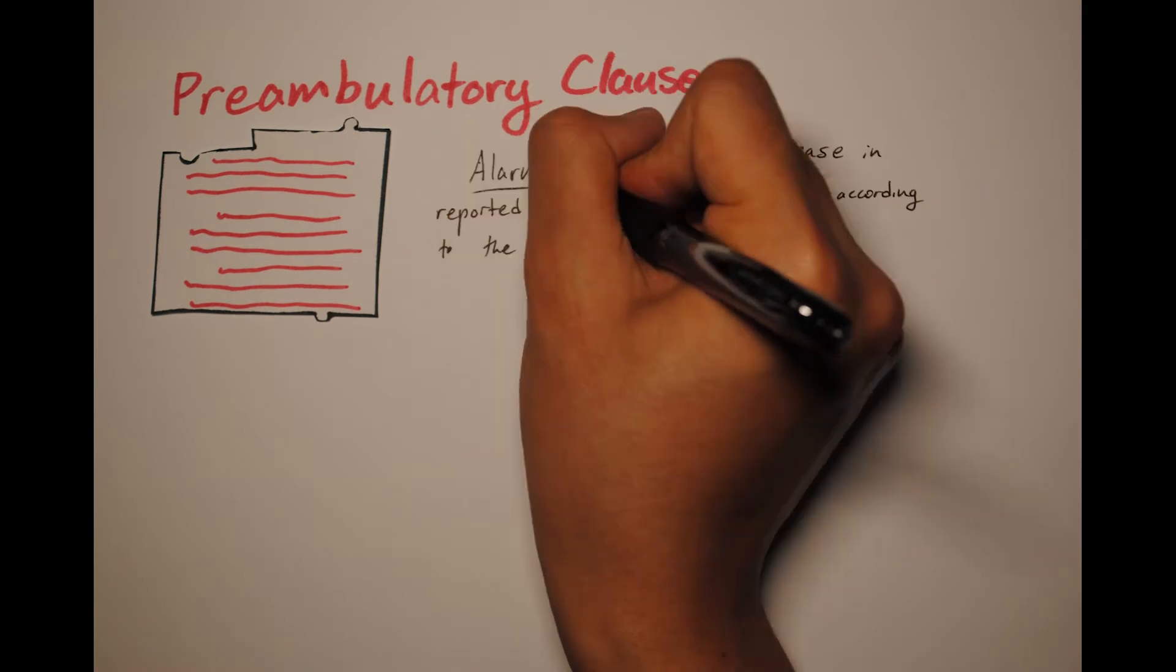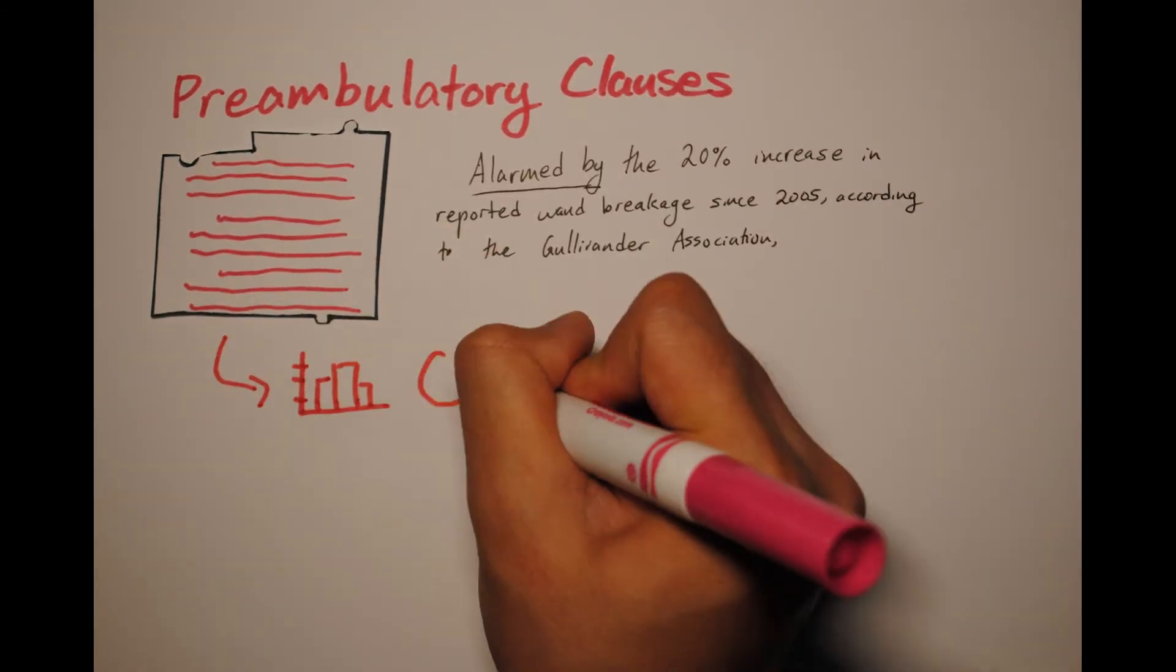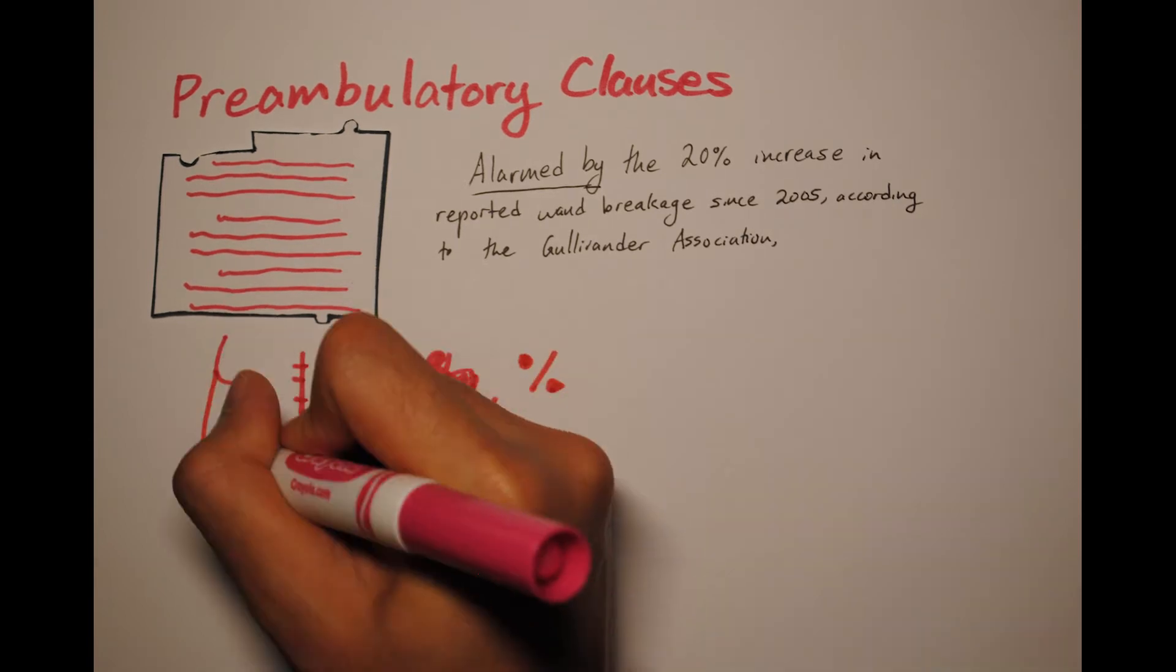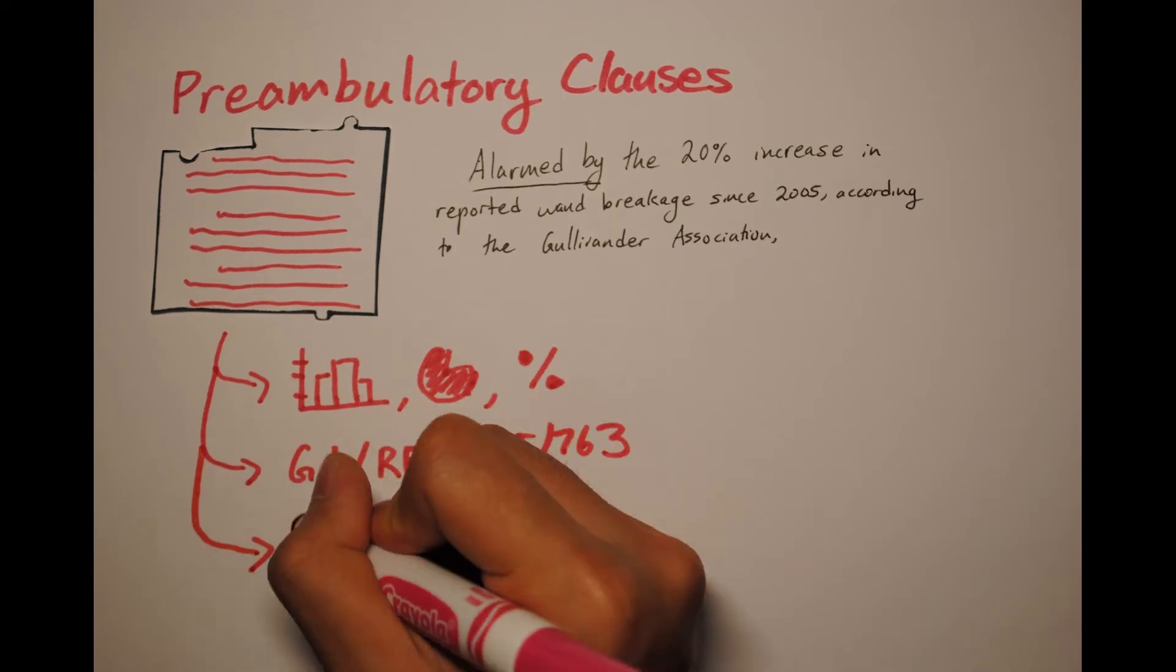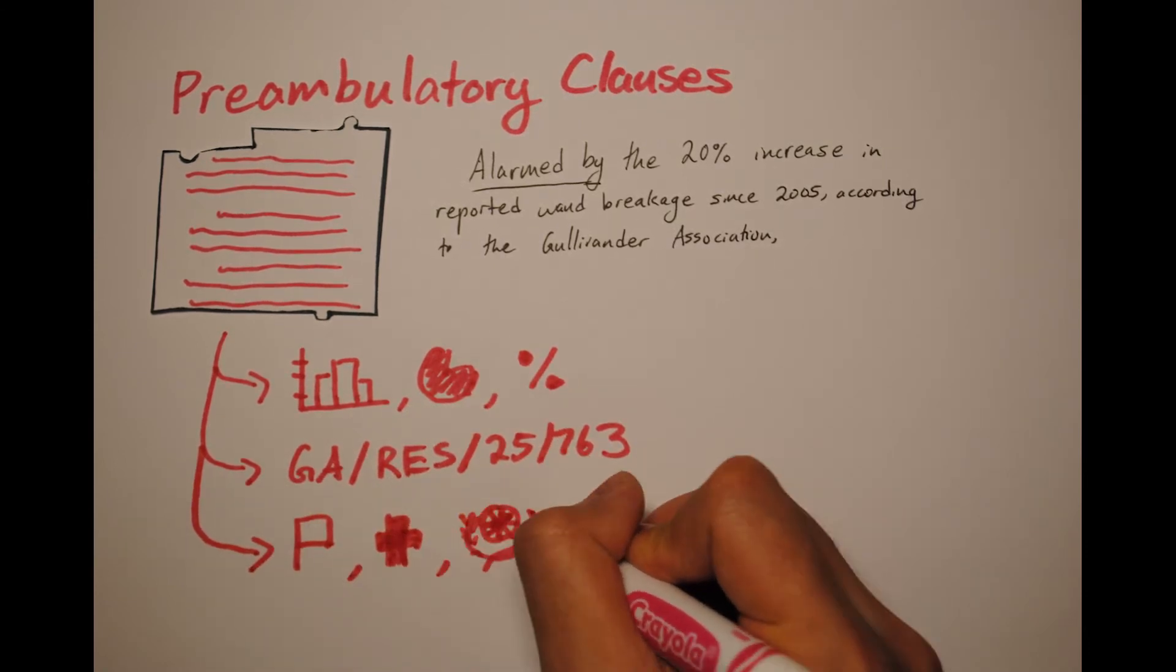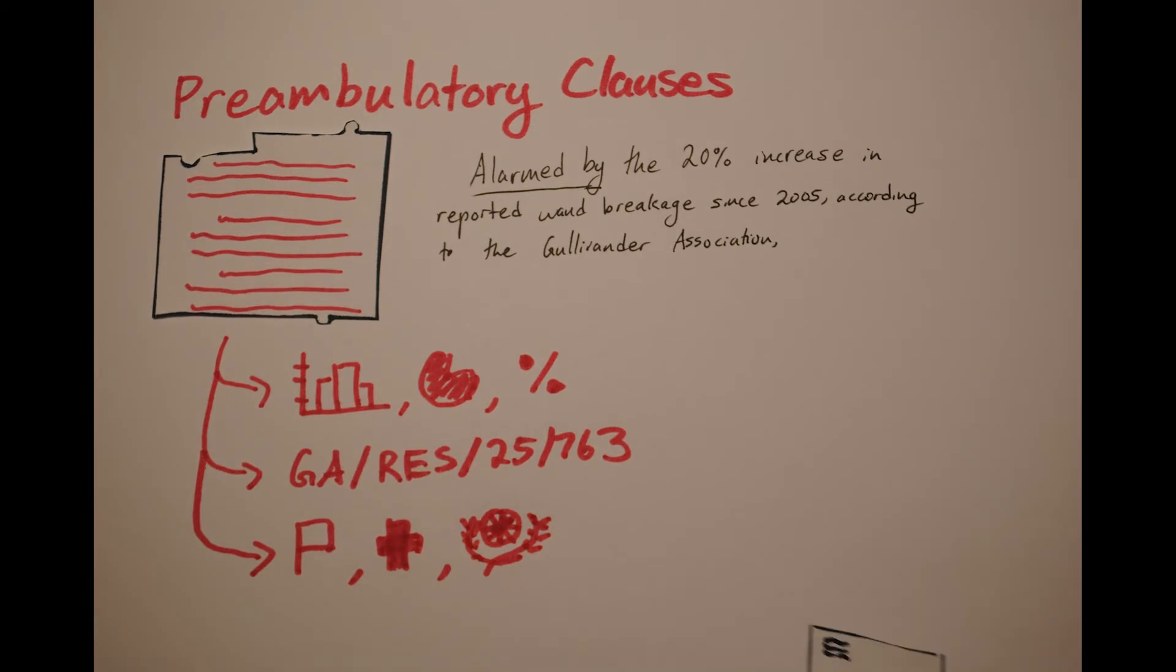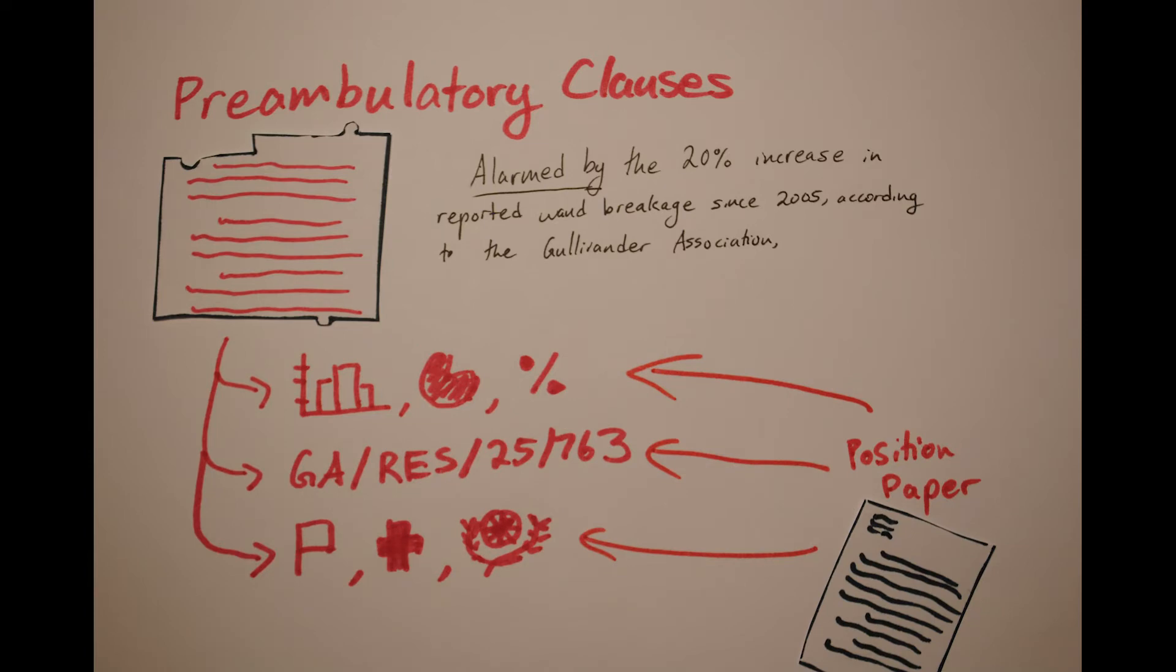Then include your research. Why is this an important issue for the United Nations to address? What actions have already been taken by international governments, NGOs, and the United Nations? What are the details of the issue? How is your country involved? These clauses give us cold, hard facts. A lot of the information you'll be using is the same as what was in your position paper. End your preambular clauses with a comma.